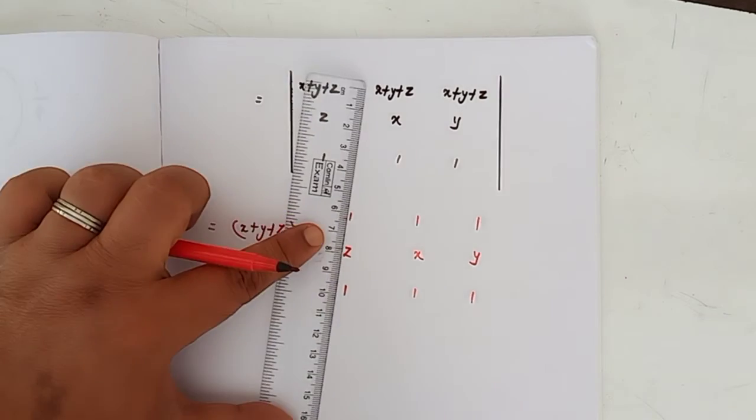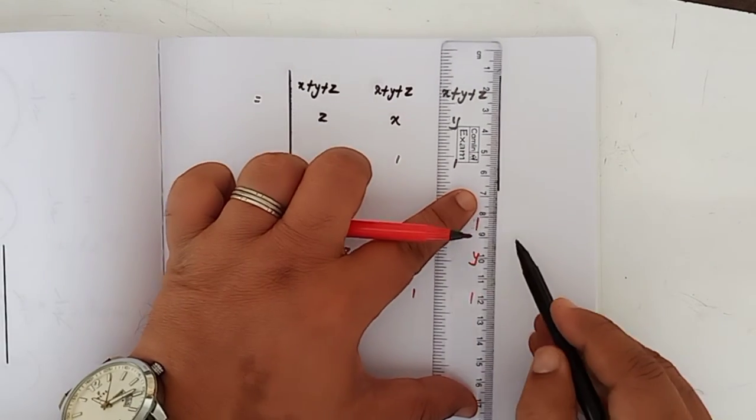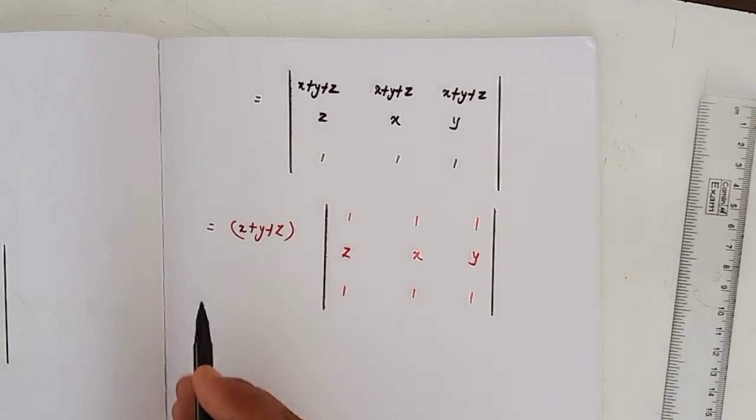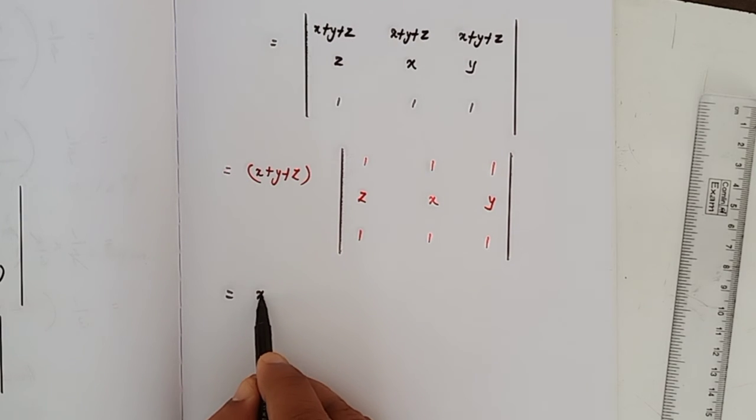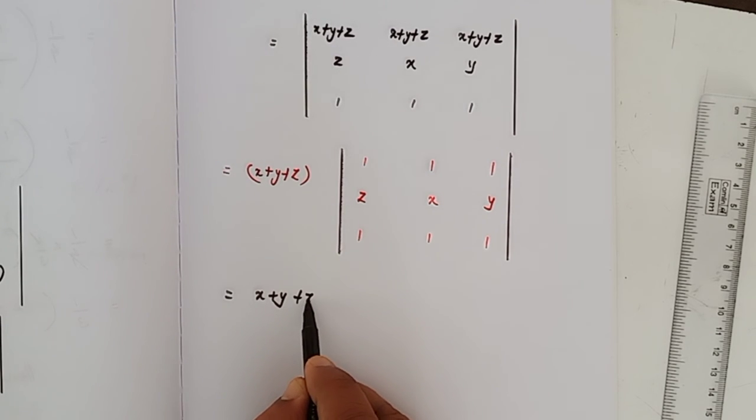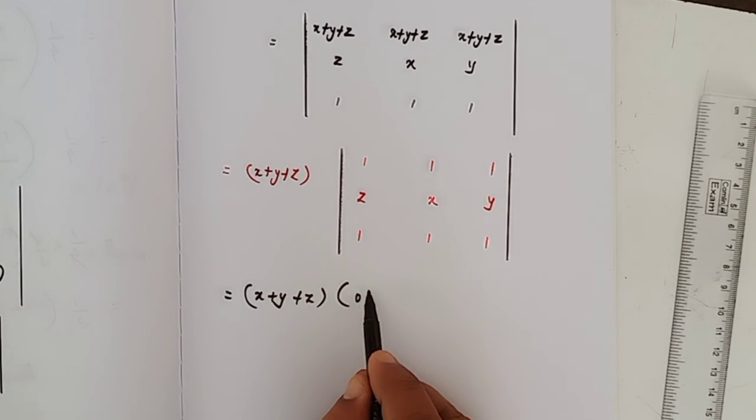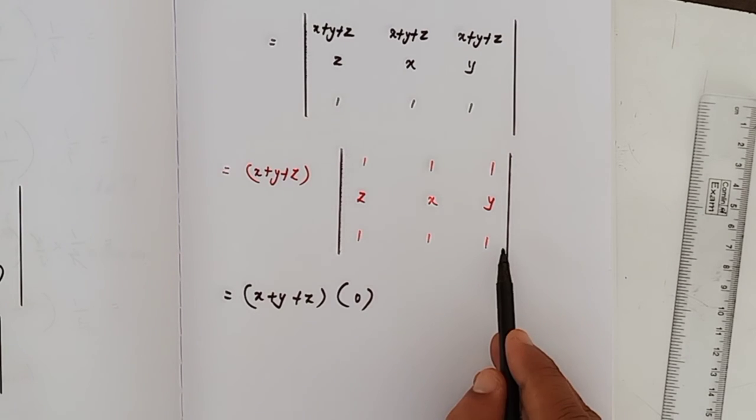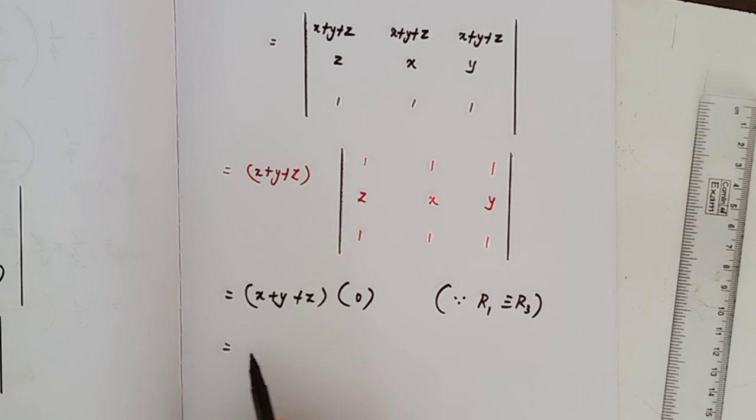Now the determinant, that is equal to write that x plus y plus z as it is into 0, because we have two rows are identical. So R1 is identical to R3. Now 0 into anything is 0.